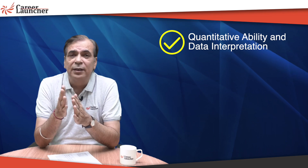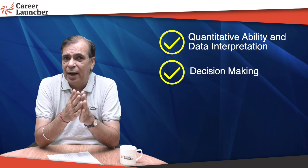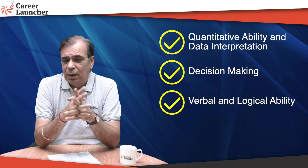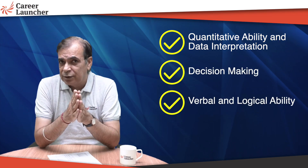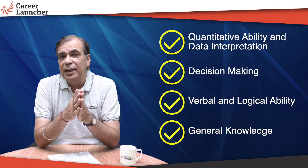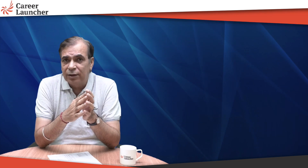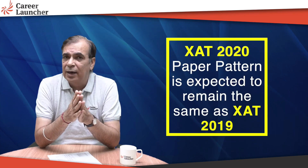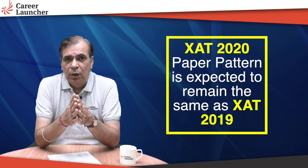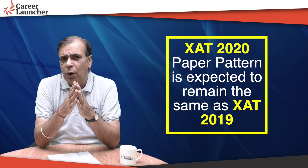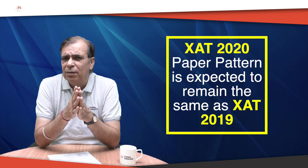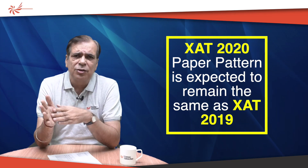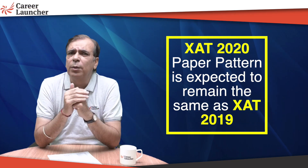All they have mentioned is there will be four sections like last year: quantitative aptitude, decision-making, and verbal reasoning. The fourth section is GK. The essay section, which existed until the year before last, was discontinued last year and I don't expect it to come back. So from your perspective, the structure of last year is most likely to be followed.